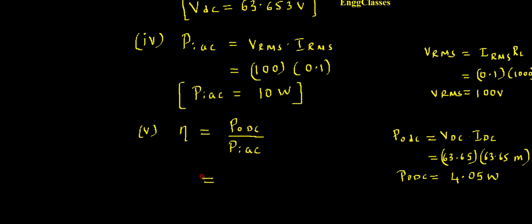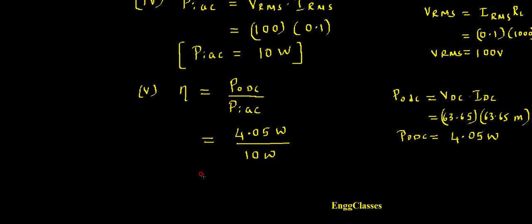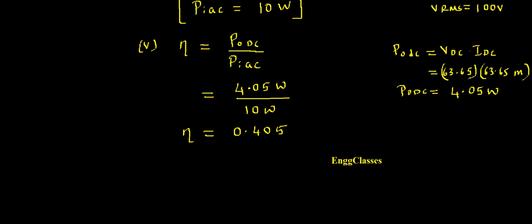Substituting into the efficiency formula: eta = P0_DC / PI_AC = 4.05 / 10 = 0.405. Converting to percentage, the rectifier efficiency = 0.405 × 100 = 40.5 percent.